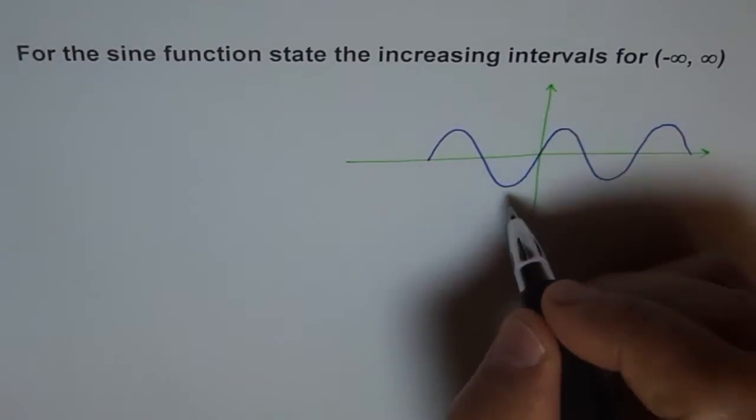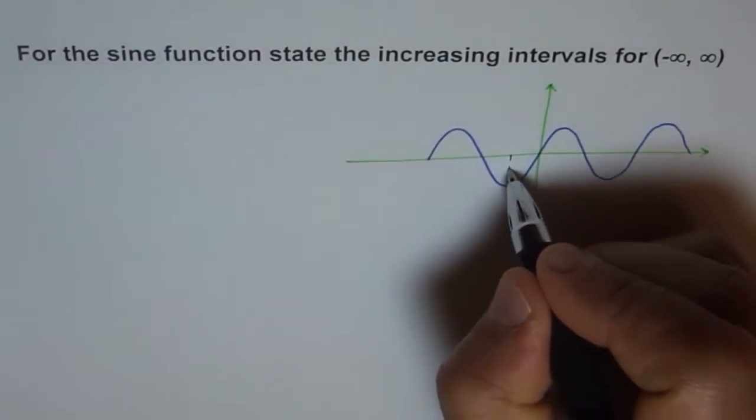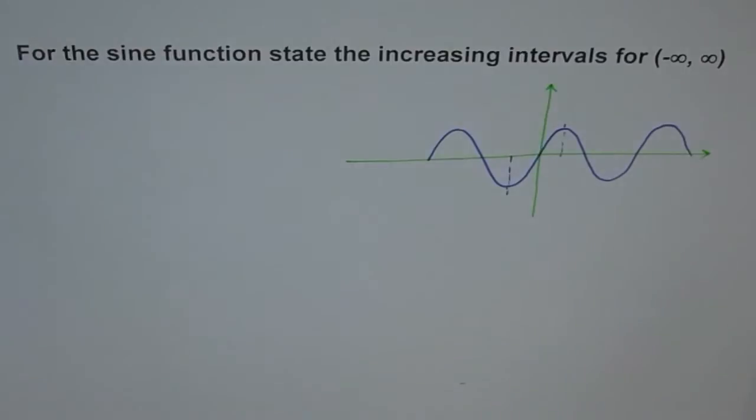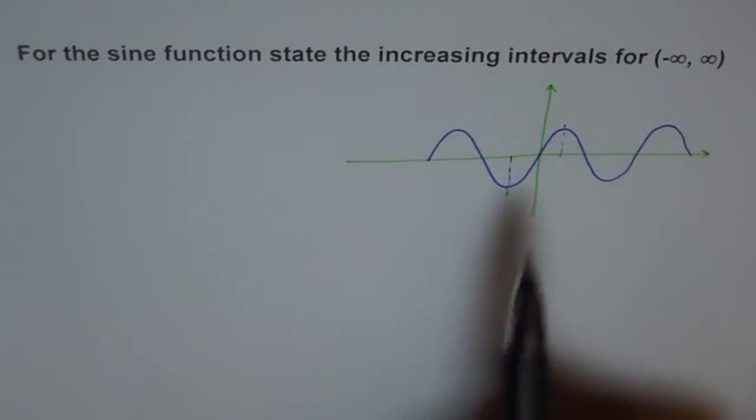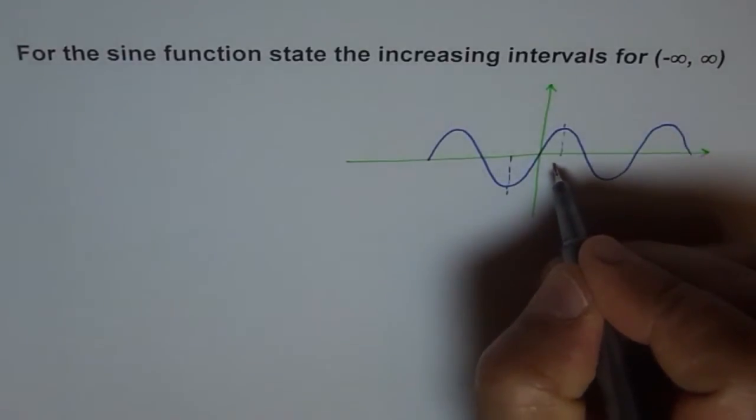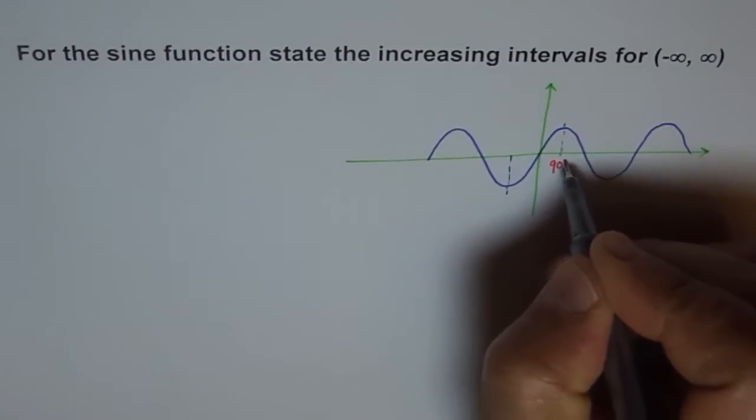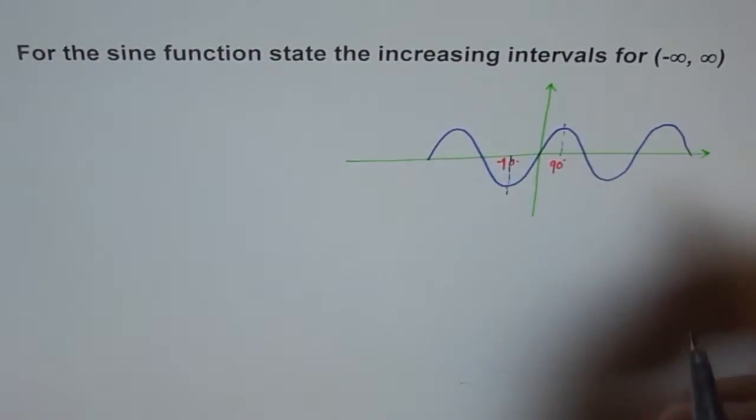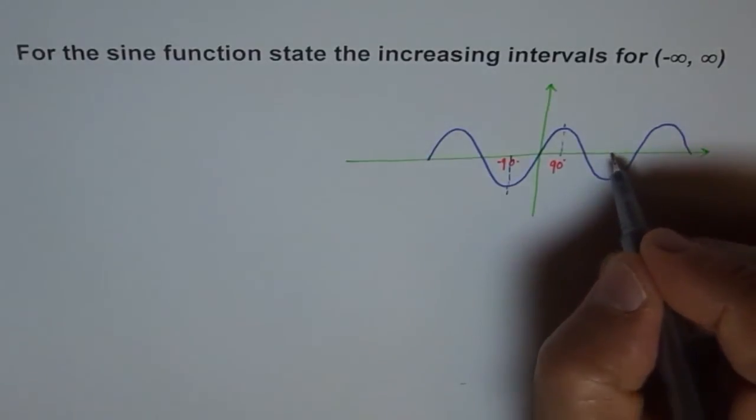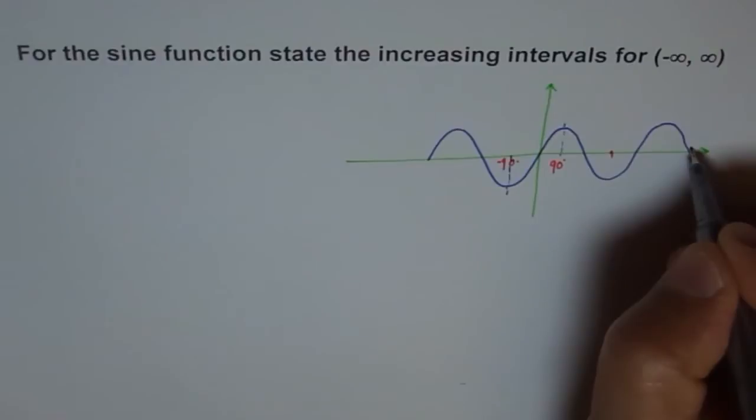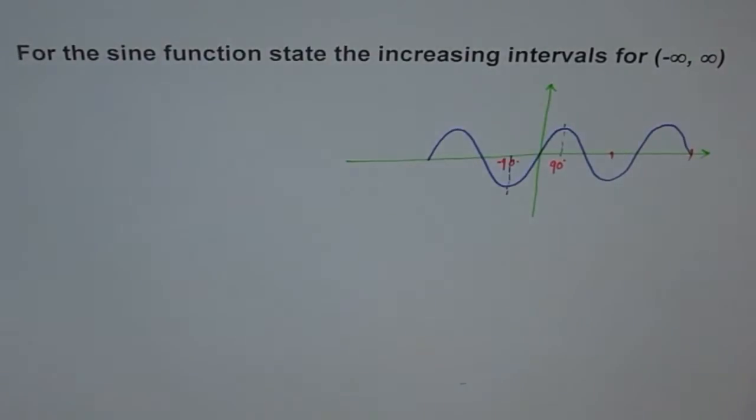So let's do this. So the increasing interval is from here. You can see it increases from here to here. That is the increasing interval for a sine function. And what are these points? You know this is 90 degrees, and this is minus 90. And then it will be here, and then it will be here.